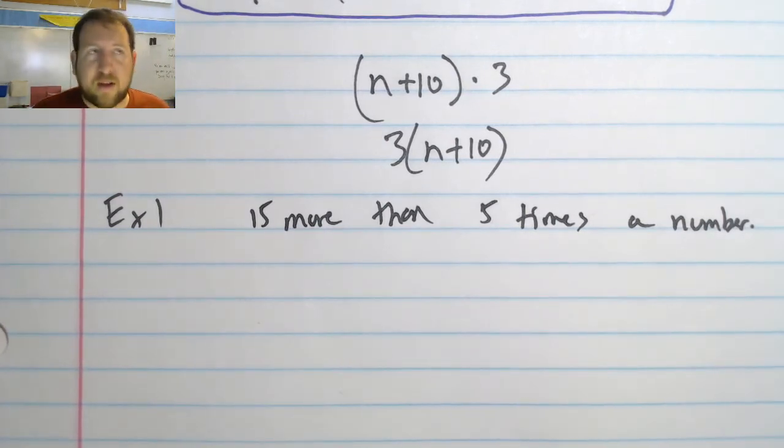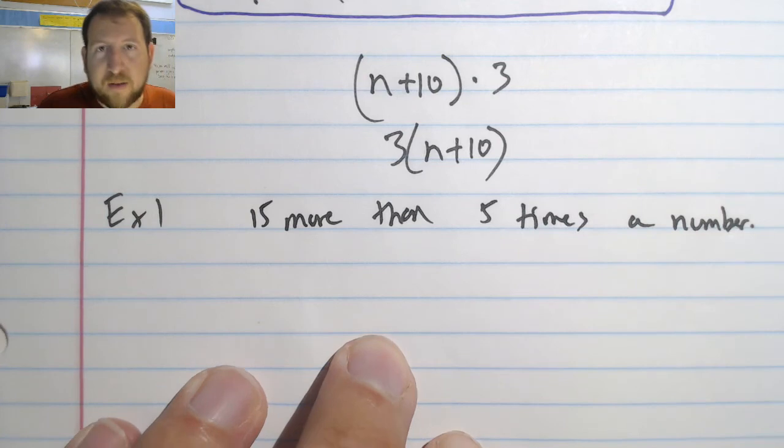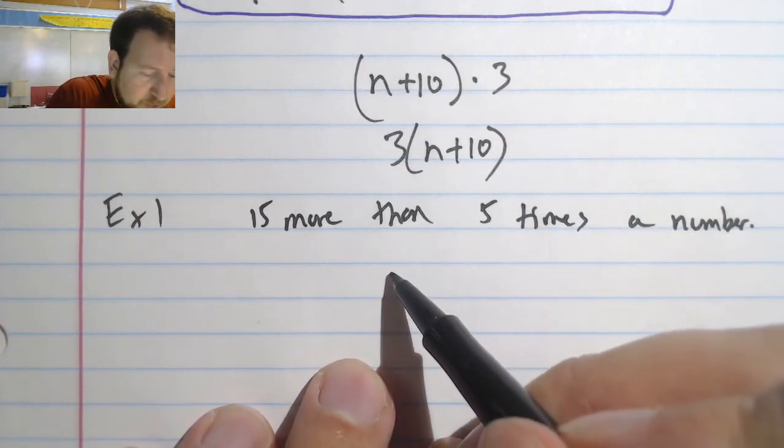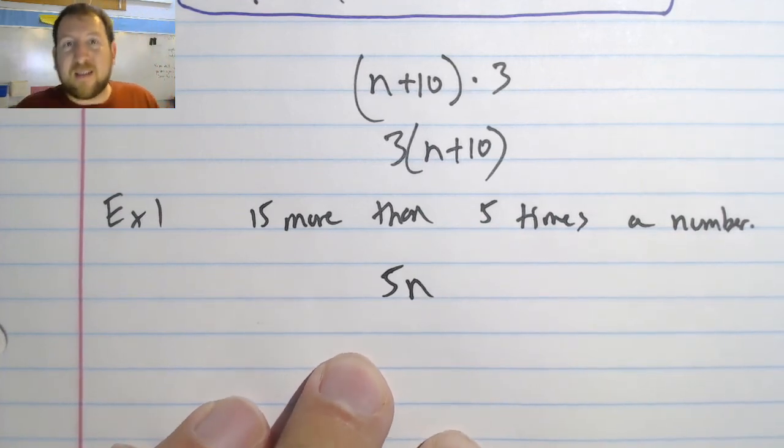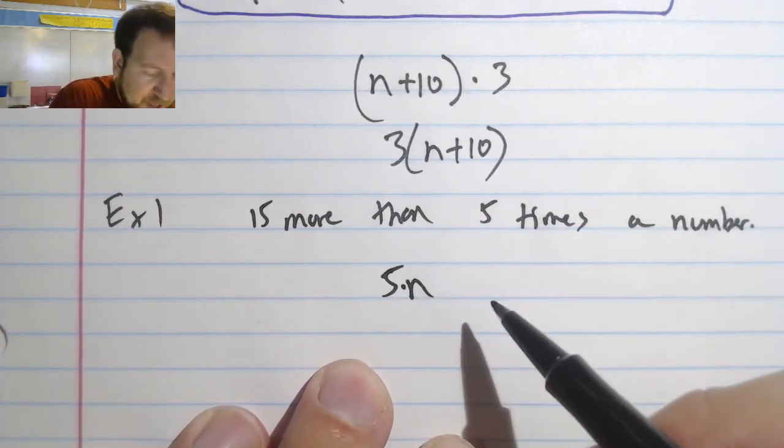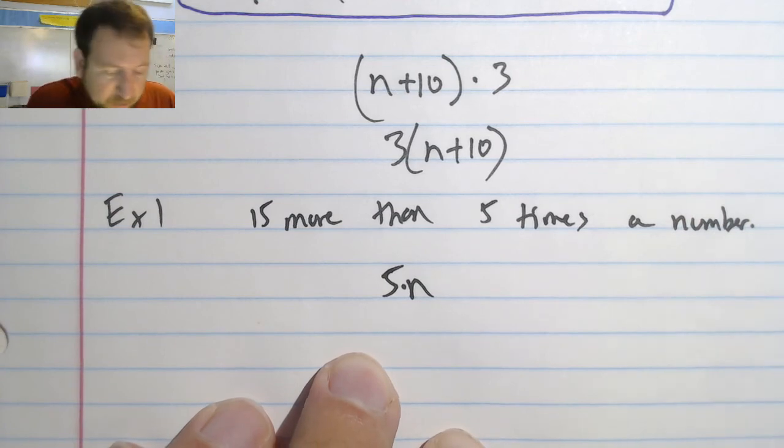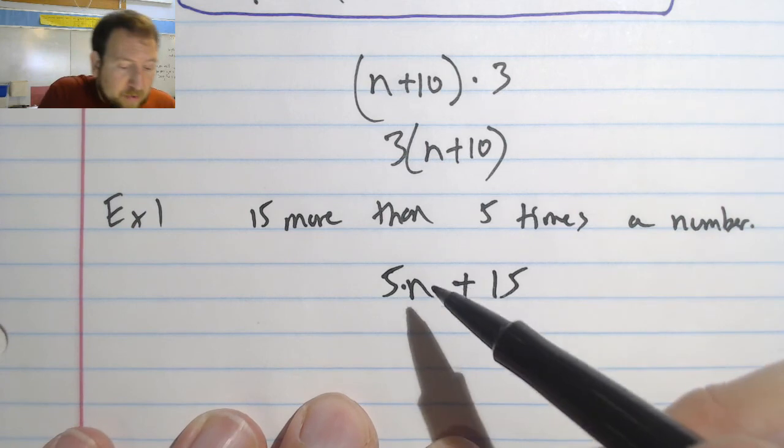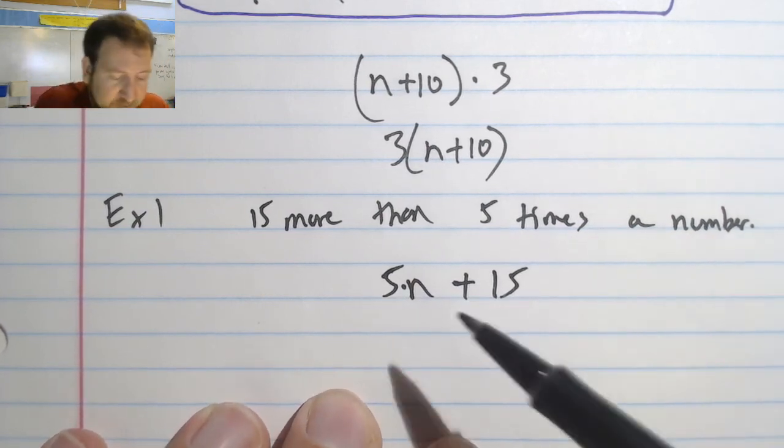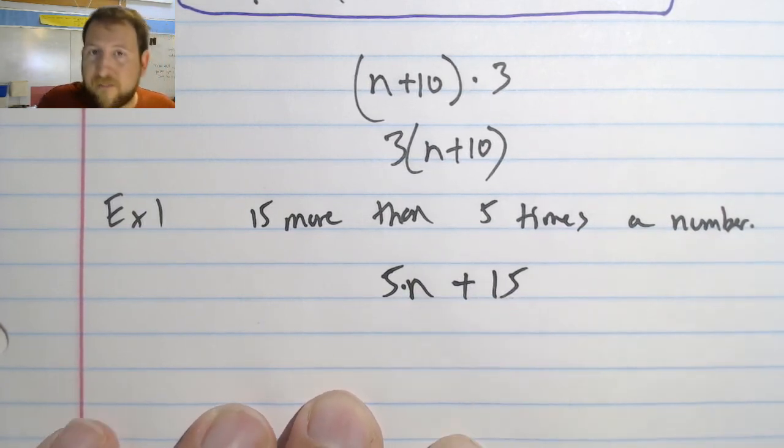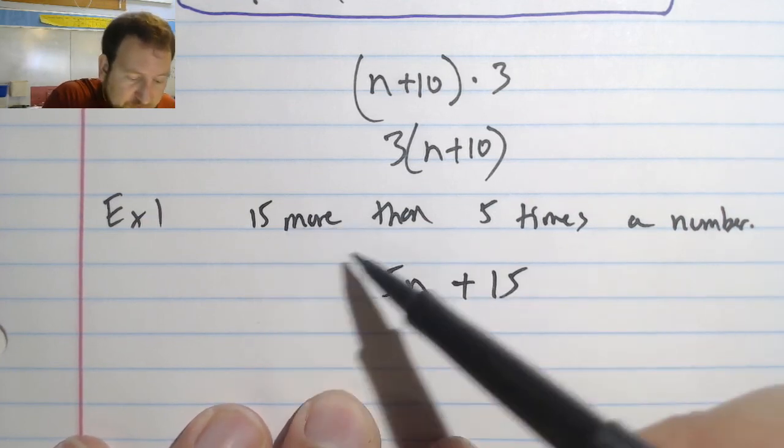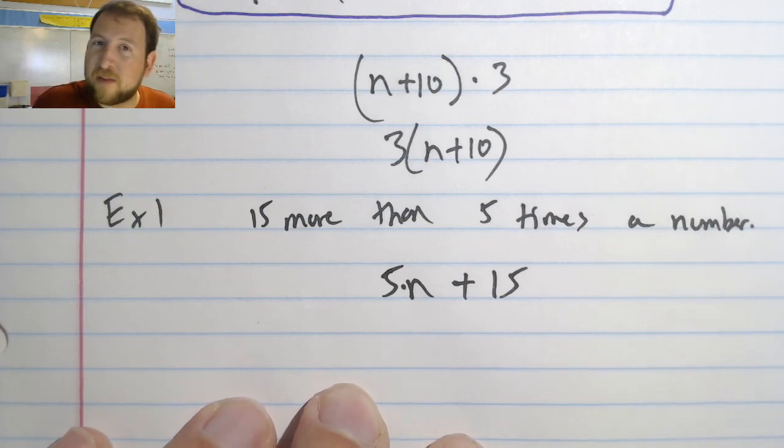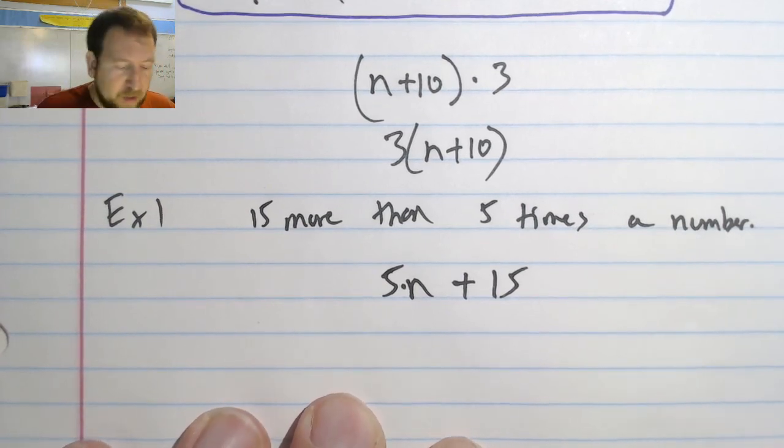15 more than 5 times a number. In this case, I'm going to do 5 times a number first, and it's going to be 5 times a number. So we'll do 5 times a number; in this case it's going to be just n like this. I can put a times or I can know that it's implied. And then I'm going to add 15 to it. So this one's easy—it's not a quantity this time, so I'm not going to be adding first, I'm going to be adding afterwards. So it's 15 more than 5 times a number, and this 5 times a number is going to be first because that's how our order of operations work.